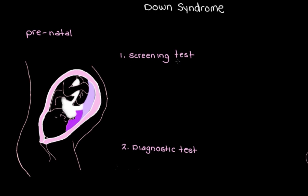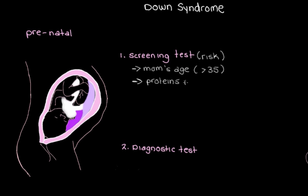A prenatal screening test is used to get an indication — an idea of the chances that a fetus has Down syndrome. It's almost like looking for risk factors. We look at things like the mother's age, because once mom is over 35, the risk of Down syndrome increases, and we look at biomarkers in mom's blood — different proteins made by the fetus, placenta, or mom herself. Specific patterns in the levels of these proteins can give us a clue as to whether mom is carrying a fetus with Down syndrome.